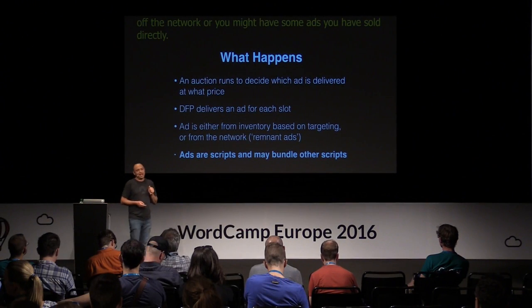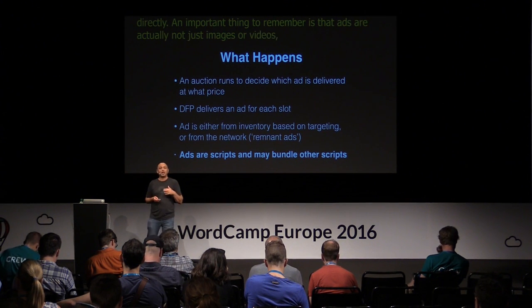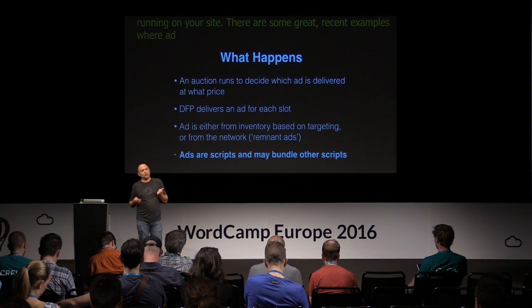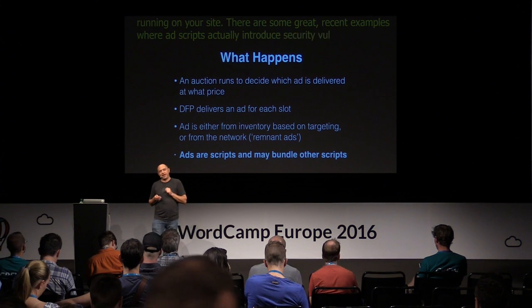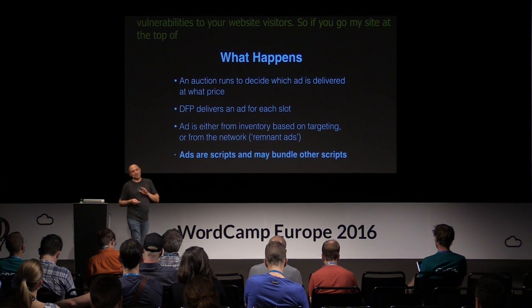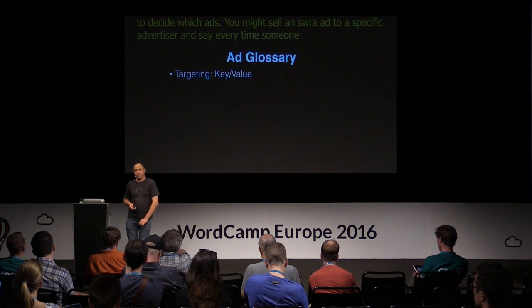An important thing to remember is that ads are not just images or videos — they're actually scripts running on your site. There are recent examples where ad scripts have introduced security vulnerabilities to website visitors. I've linked to some examples on my site. In terms of targeting, 'key value' refers to simple values you pass from your website to the ad server when requesting ads — for example, the category of the page or tags on the page. These values are used by ad traffickers to decide which ads appear. So you might sell an ad to a specific advertiser and say: every time someone visits a page in this category, your ad will appear. That's key value targeting.